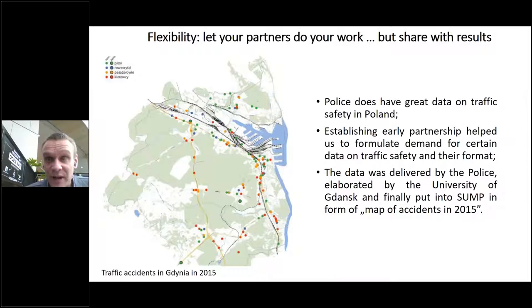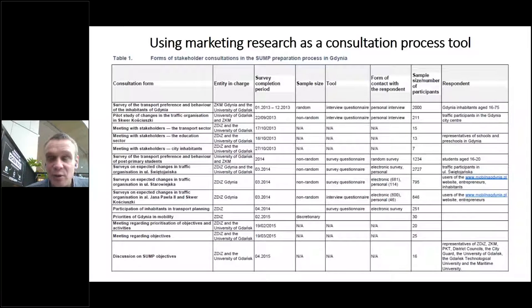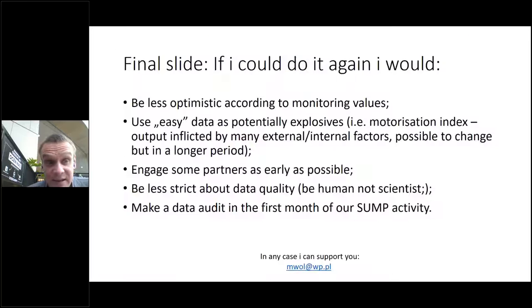The map was highly evaluated by the police, so we established a long-term partnership with them, and the map of accidents in 2017 will be published soon — providing good input for our improved SUMP. We also used marketing research as a consultation process tool. A lot of surveys were collected. Preparing a survey does not have to be a scientific process — if you need some confirmation or initial data, you can prepare a very quick questionnaire, electronic surveys being very easy and low-cost.